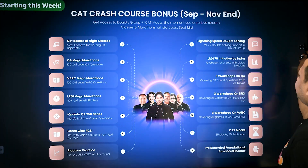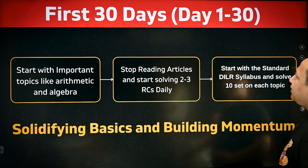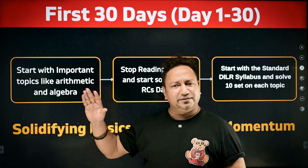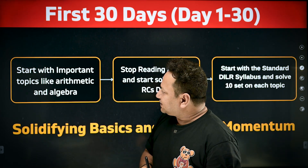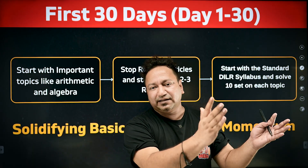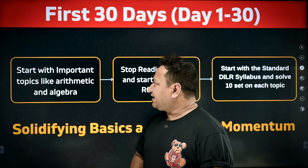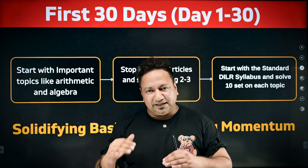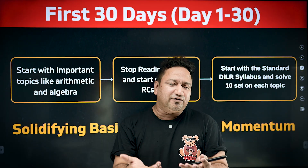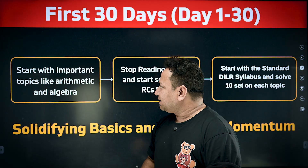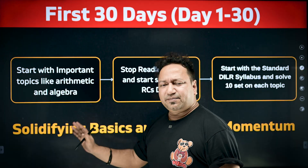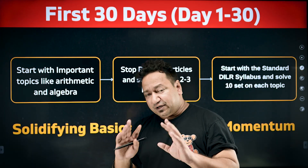Let's go day by day. First 30 days, day 1 to 30. Start with important topics like arithmetic and algebra for quant — different sections will have different strategies. Arithmetic and algebra form around 60 to 70 percent of the entire CAT quant paper. When I say start with this, it doesn't mean you start from scratch. By this time you've already done all the syllabus — revise only if required, otherwise go directly to practice. Revise things you feel you're lacking in arithmetic, algebra, geometry, and modern maths if needed.